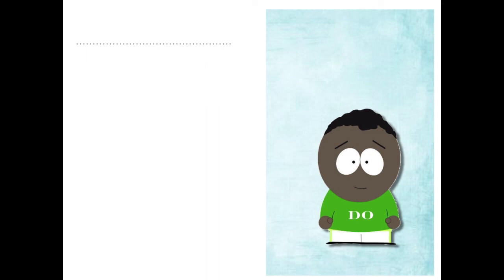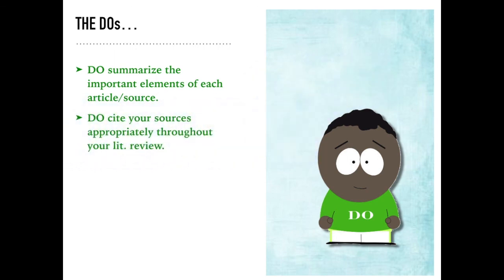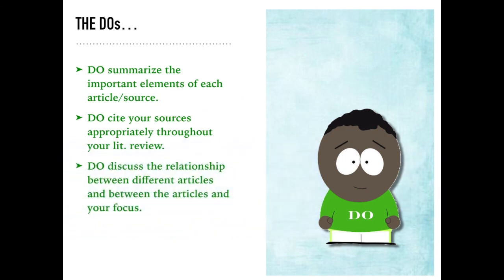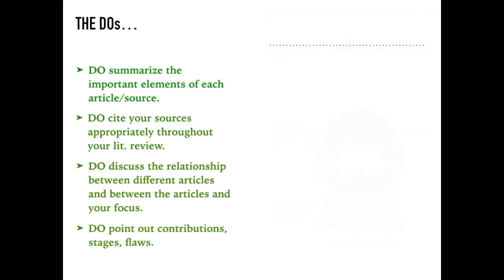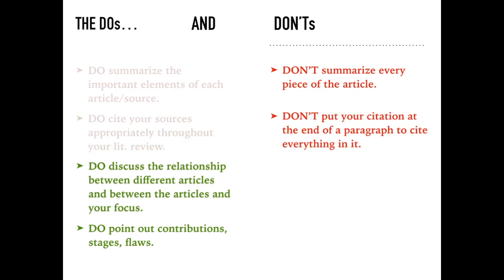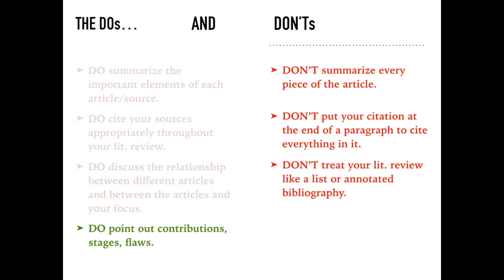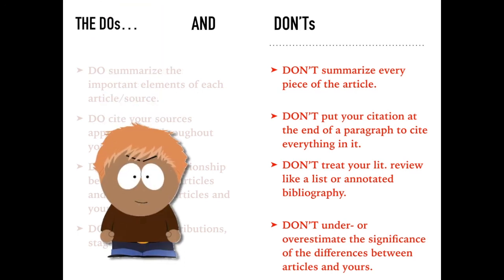There are some do's and don'ts when it comes to writing a literature review. Do summarize the important elements of each article or source. Do cite your sources appropriately throughout your lit review. Do discuss the relationship between different articles and between those articles and your focus. And do point out any contributions, stages in development, or flaws in the literature. Don't summarize every single piece of your article — pick the important parts. Don't put your citation only at the end of the paragraph. Don't treat your lit review like a list or annotated bibliography — it's a narrative. And don't under or overestimate the significance of differences between the articles and your research. Keep it real and think about the validity of what you're hoping to do and how that will find its place in the overall body of knowledge.